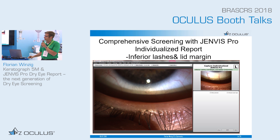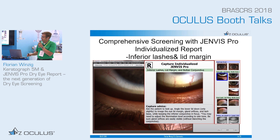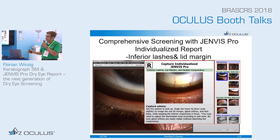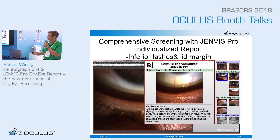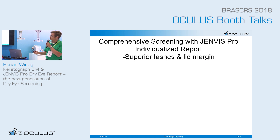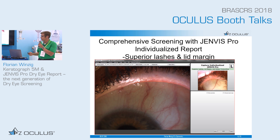Next we look at the lid margin and lashes. The aim is to identify any scalloping or notching at the lid margin, saponification, redness, or blepharitis. You can also examine the superior lashes and lid margins and incorporate those findings into your diagnosis and assessment.